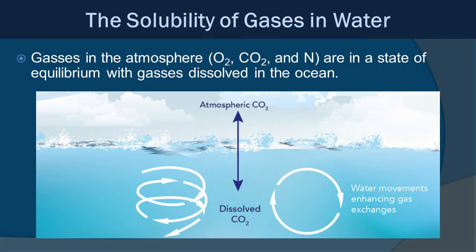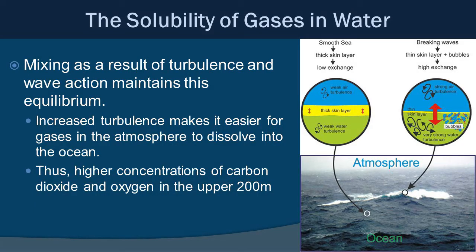Gases in the atmosphere — including oxygen, carbon dioxide, and nitrogen — are all in a state of equilibrium with gases dissolved in the ocean. This equilibrium is maintained through mixing as a result of turbulence and wave action. Increased turbulence makes it easier for gases in the atmosphere to dissolve into the ocean.